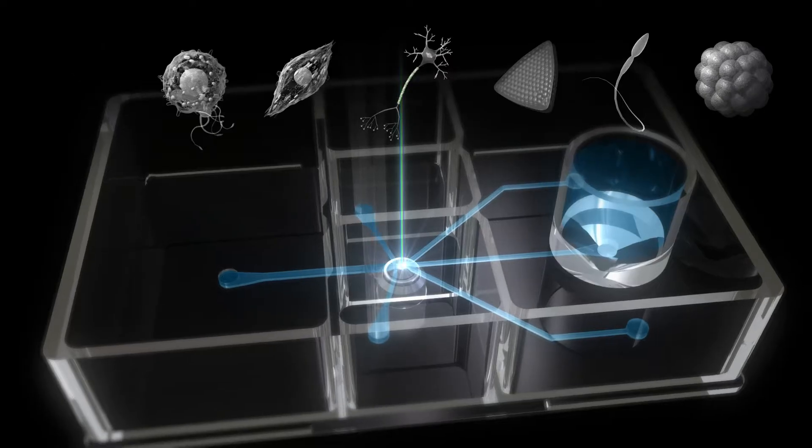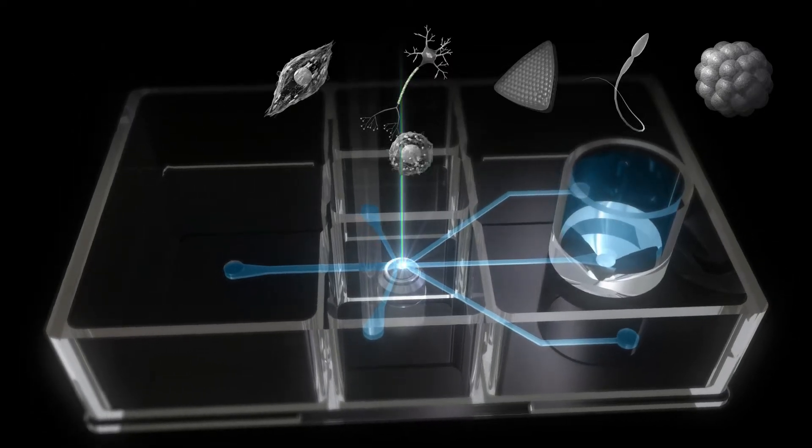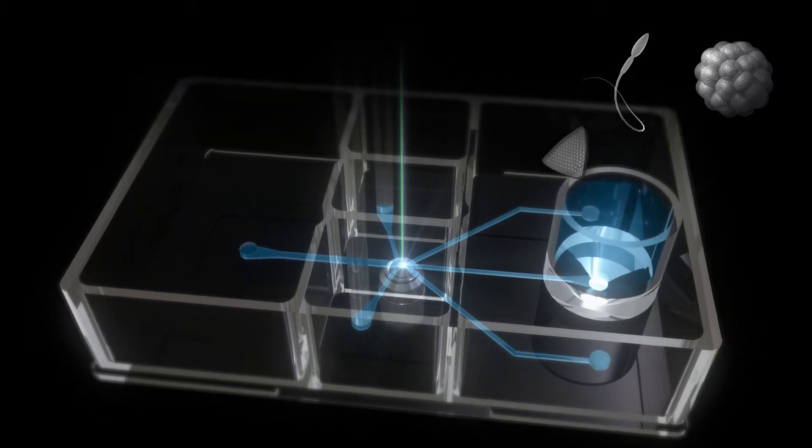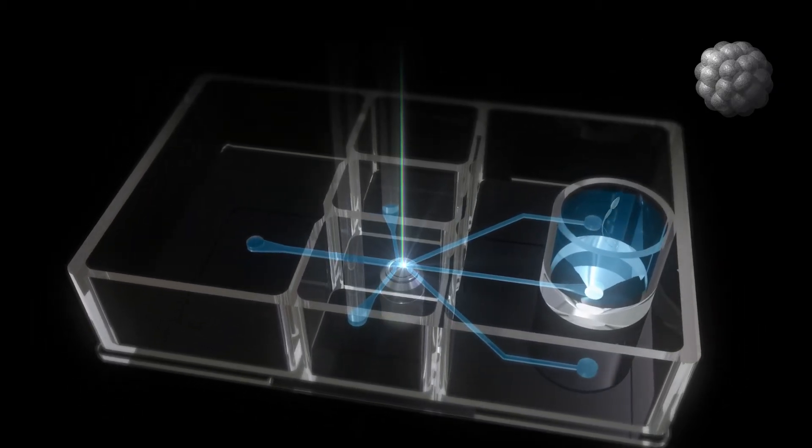On-chip Sort allows sorting of many cell types, ranging from 0.5 to 150 micrometers, including bacteria, myocytes, neurons, marine organisms, sperm, and cell clusters.